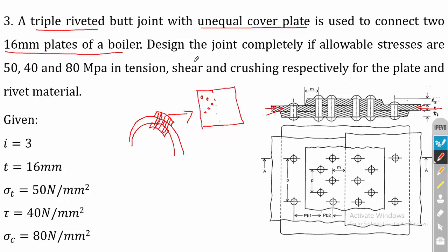Design the joint completely if the allowable stresses are 50 MPa, 40 MPa, and 80 MPa in tension, shear, and crushing respectively for the plate and rivet material. From the given data, the number of rivets is 3 on each side — you can see rivet 1, 2, and 3.